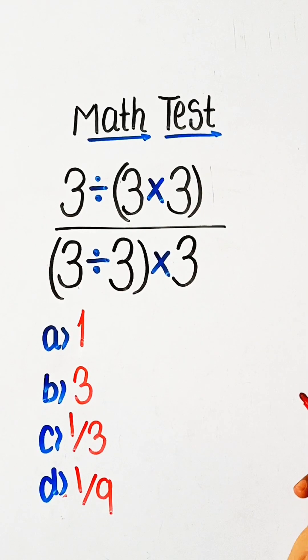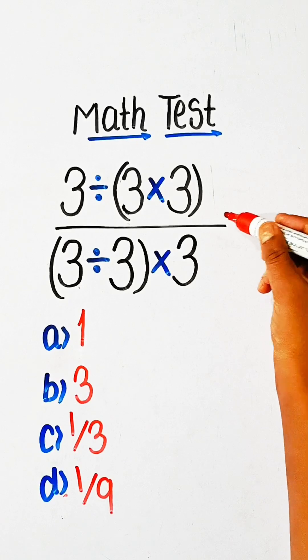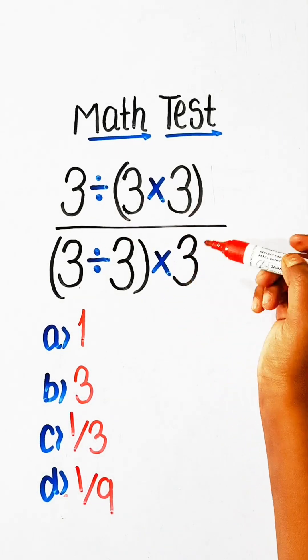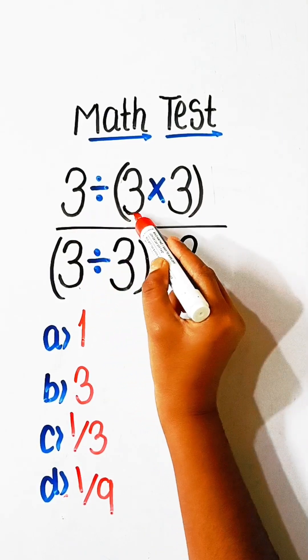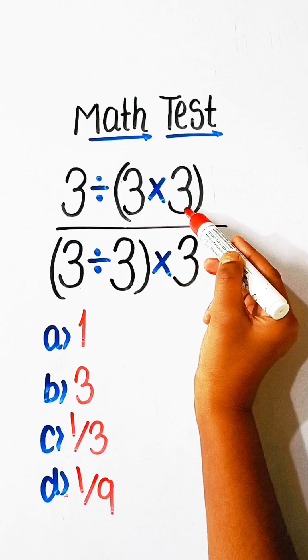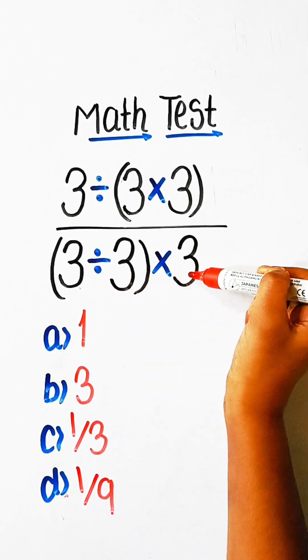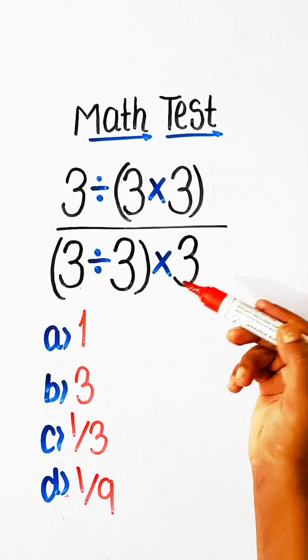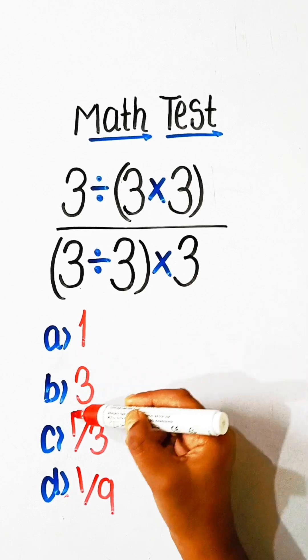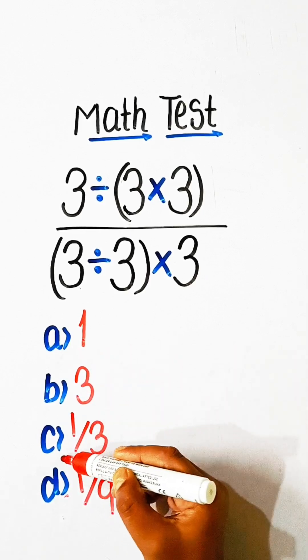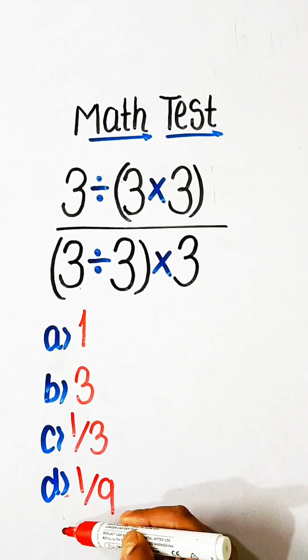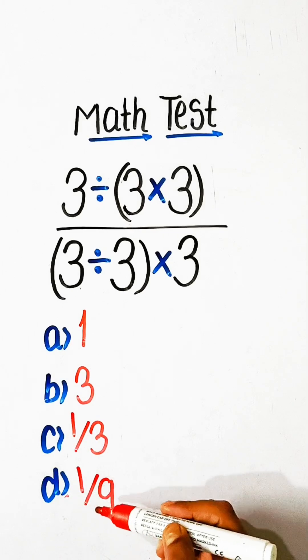Hello friends, in this video we will try to solve this math expression: 3 divided by 3 multiplied by 3 upon 3 divided by 3 multiplied by 3 equals to what? Option A: 1, Option B: 3, Option C: 1 upon 3, or Option D: 1 upon 9.